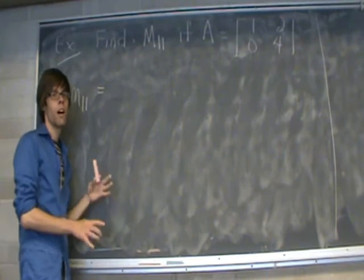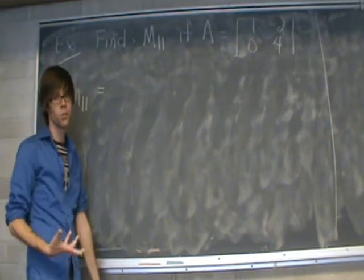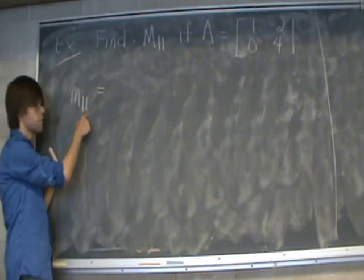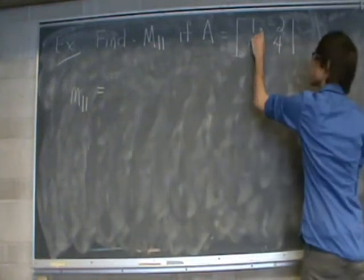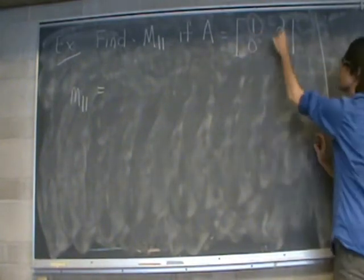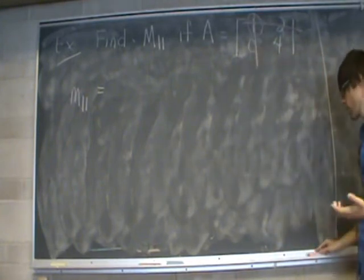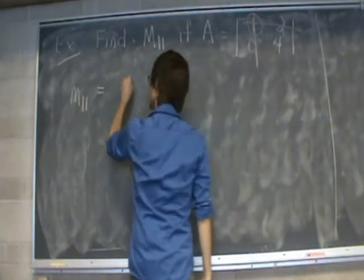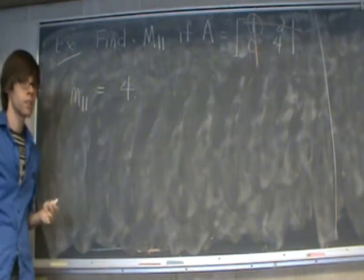If you're ever finding minors for a 2x2 matrix, you'll run into a special situation. To find the minor of the 1,1 entry, we circle it and delete all information in row 1 and column 1 — we're just left with a single number, 4. That single number is the minor of the 1,1 entry.